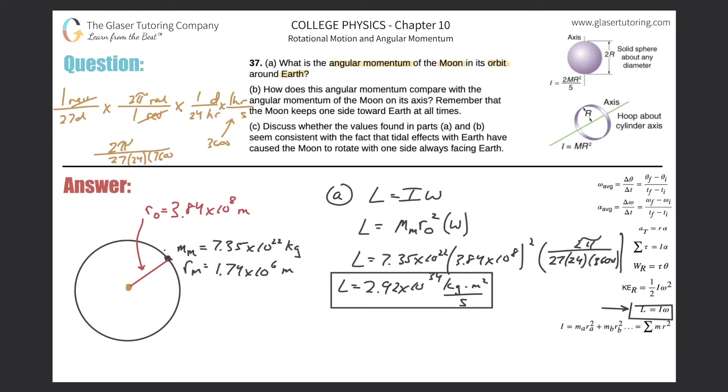So let's take a look at letter B. How does this angular momentum compare with the angular momentum of the moon on its own axis? Remember that the moon keeps one side toward the earth at all times. So basically what that means is, here is the moon. Let's just pretend this part of the moon is the face that is facing the earth. When it rotates then to the other side, it would then look just like this. Here's the moon on the other side, and the face is still facing the earth. So actually to make one revolution around the moon's own axis, it takes the same amount of time as it does for the moon to make one full revolution around the earth. That's the whole reason why they're telling that to you.